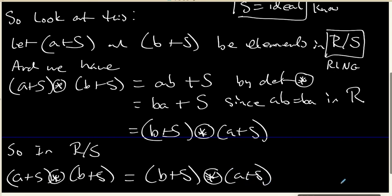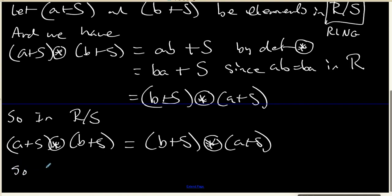In other words, what we have is that R mod S, under its addition and its multiplication, is a commutative ring.